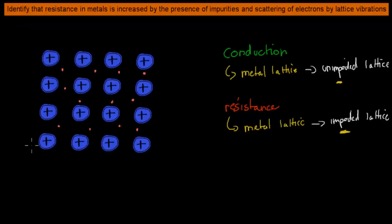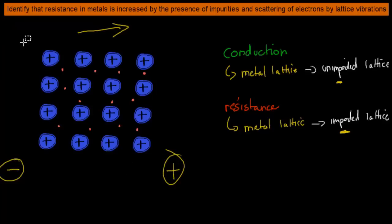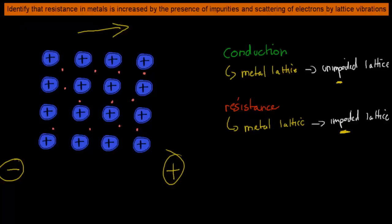We also need to apply a voltage to make electrons move in one direction only. For example, with a negative terminal on one side and a positive terminal on the other, electrons move from the negative to the positive terminal; otherwise they'd just move randomly through the lattice. This leads us to the main topic: resistance in metals is increased by the presence of impurities and scattering of electrons by lattice vibrations.